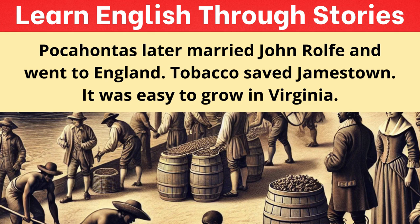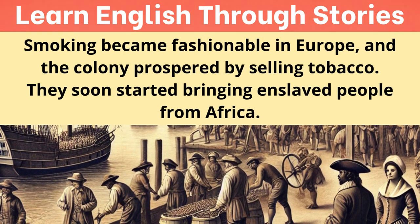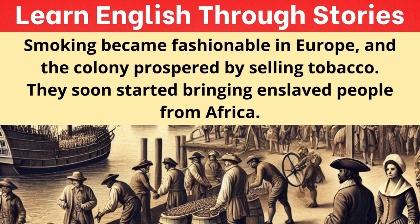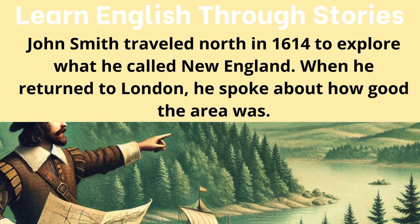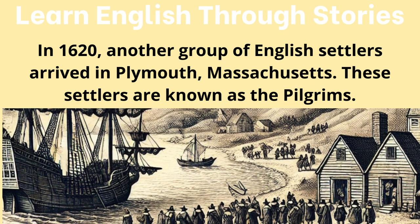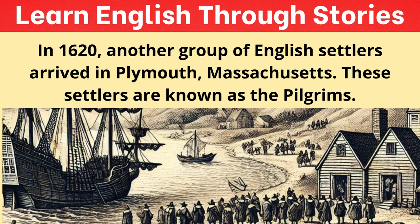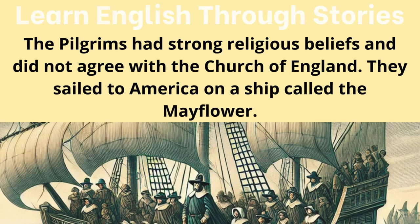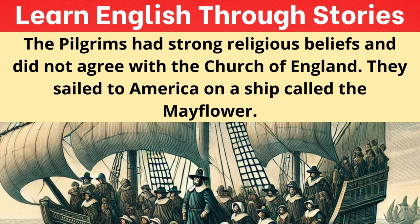They soon started bringing enslaved people from Africa. John Smith traveled north in 1614 to explore what he called New England. When he returned to London, he spoke about how good the area was. In 1620, another group of English settlers arrived in Plymouth, Massachusetts. These settlers are known as the Pilgrims. The Pilgrims had strong religious beliefs and did not agree with the Church of England. They sailed to America on a ship called the Mayflower. They farmed the land, traded animal skins, and believed that all people were equal, so they did not have enslaved people.